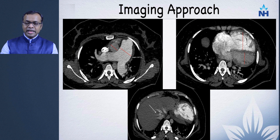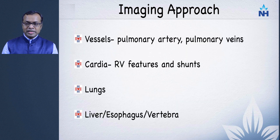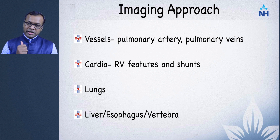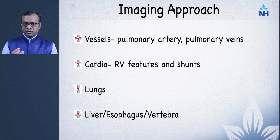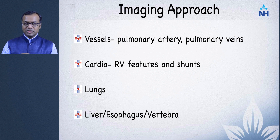Once those features are noted, begin a stepwise approach. First, look at the pulmonary arteries for acute or chronic thromboembolic disease. Second, look for abnormal communications between the pulmonary arterial and venous chain — any fistulas. Then examine the pulmonary veins to ensure they all drain normally into the left atrium and that there is no partial or total anomalous pulmonary venous connection.